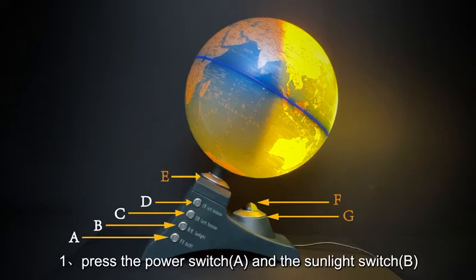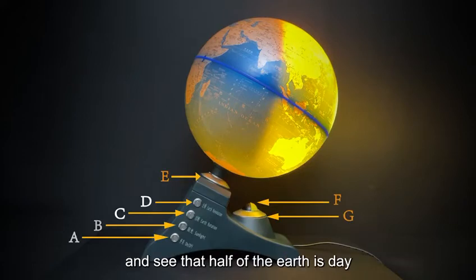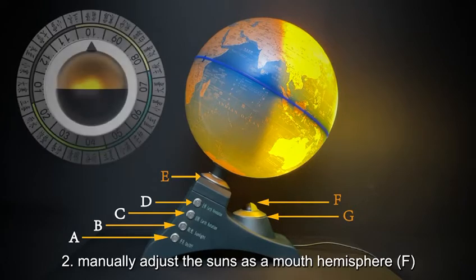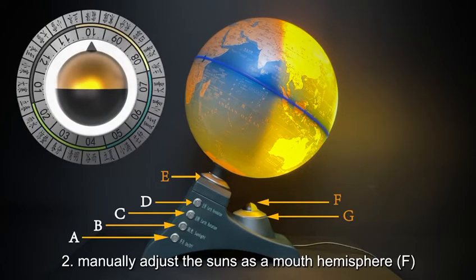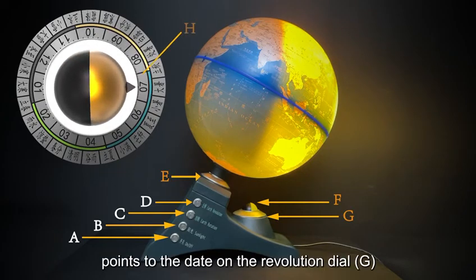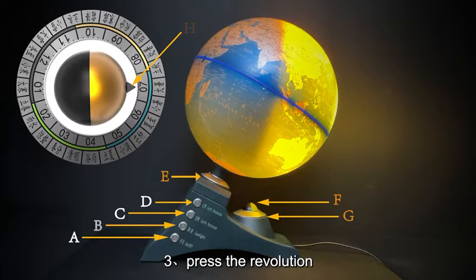Press the power switch and the sunlight switch, and see that half of the Earth is day and half is night. Manually adjust the Sun's azimuth hemisphere so that the revolution pointer points to the date on the revolution dial.